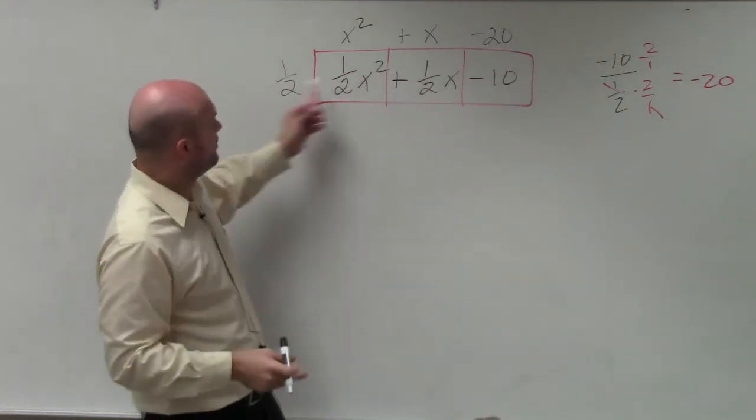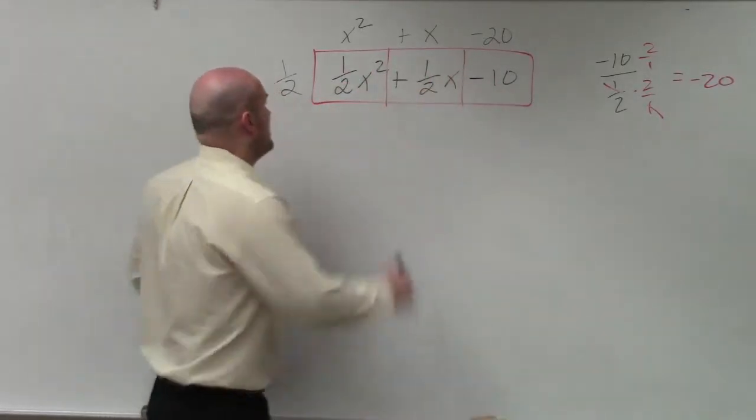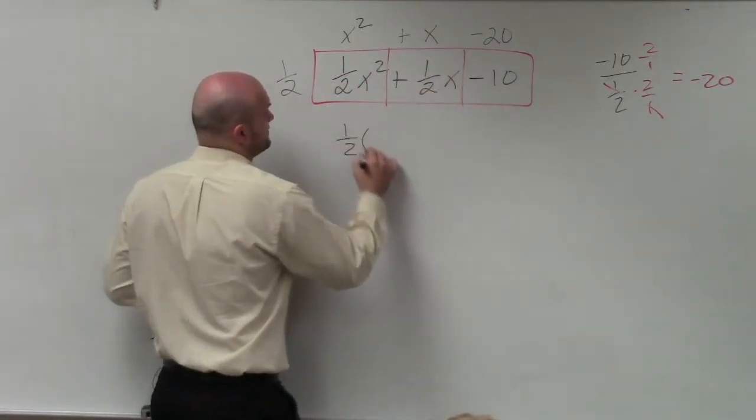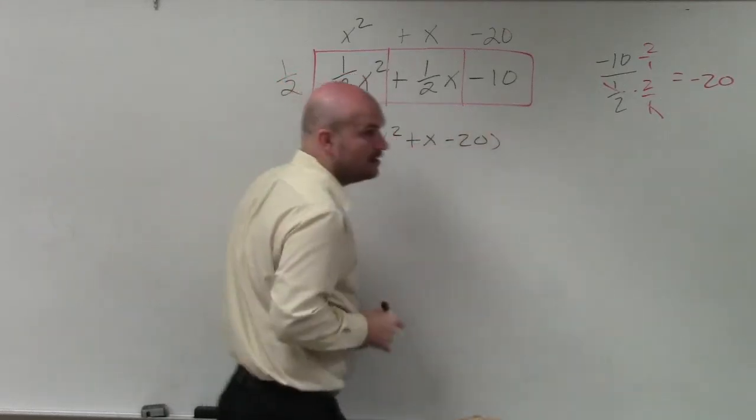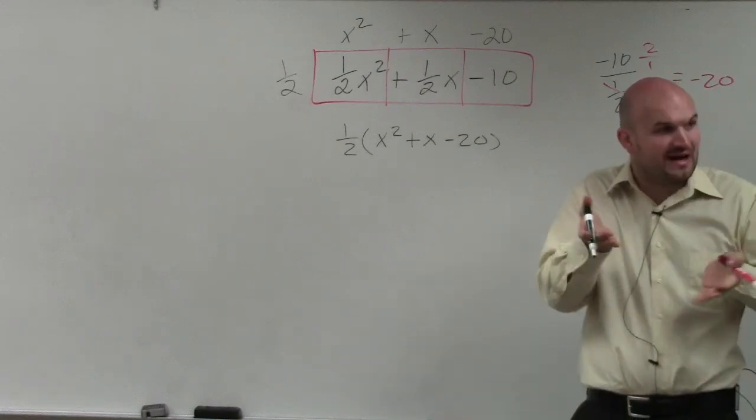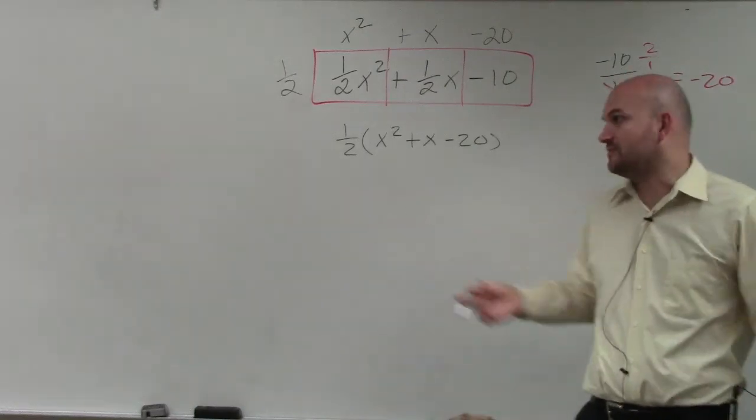Does everybody agree 1 half times negative 20 gives you negative 10? So now my factored form is 1 half times x squared plus x minus 20. Now inside those parentheses, I can further factor that down based on the techniques that we've gone over.